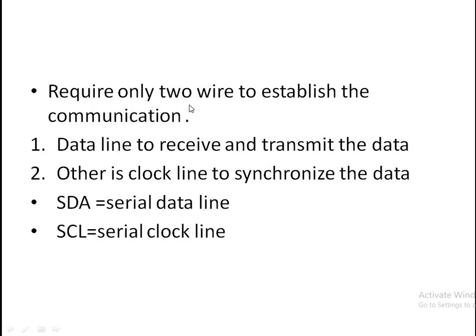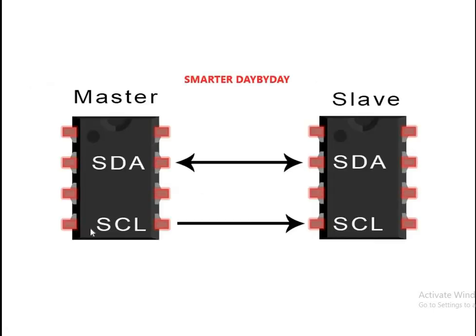I2C requires only two wires to establish the communication. The first one is a data line to receive and transfer the data, and the other is the clock line to synchronize the data. One is SDA and one is SCL.